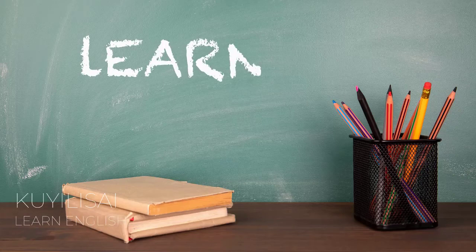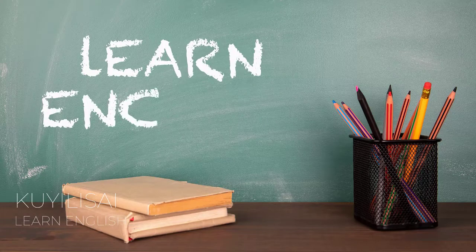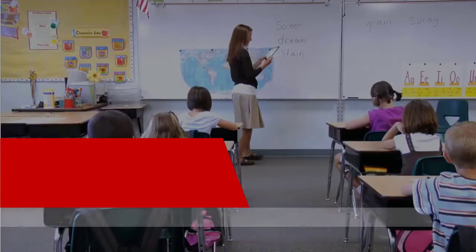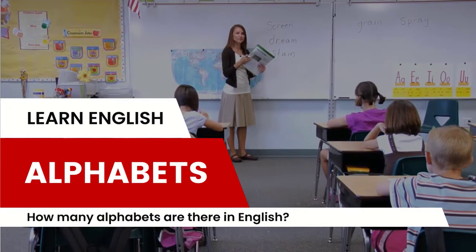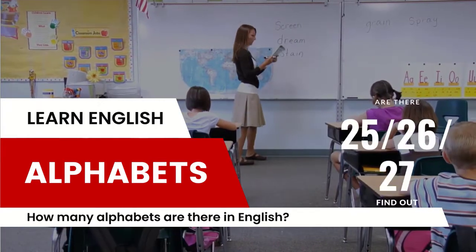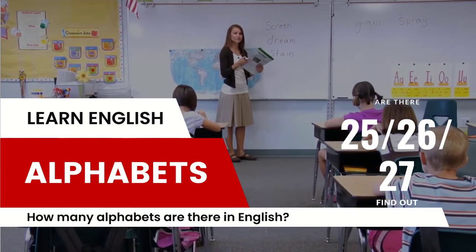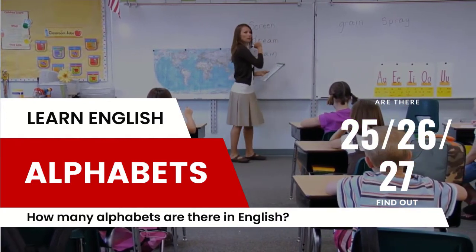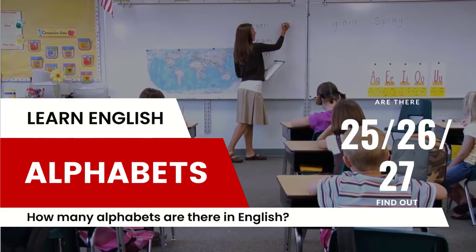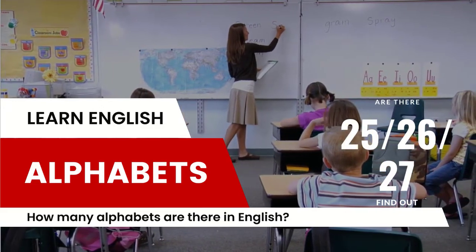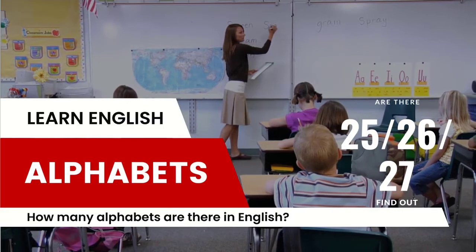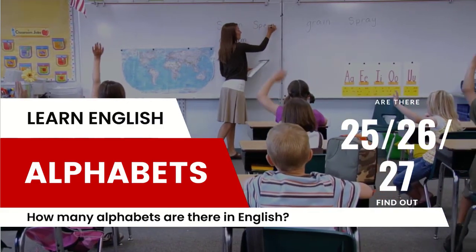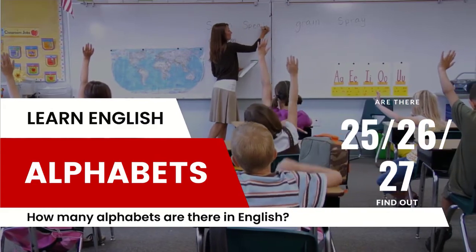Welcome to the Learn English series. In this video, we shall learn all about alphabets. How many alphabets are there in English? Our teachers in school would have asked us so. Are there 25, 26, or 27? We might have learned that the English language has 26 alphabets — but if so, it is wrong. Find out the correct answer.